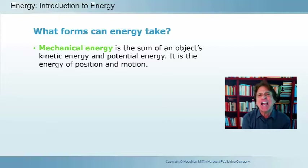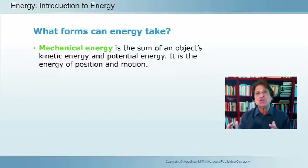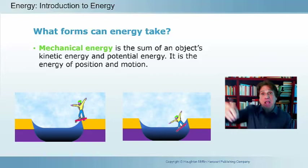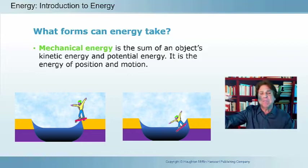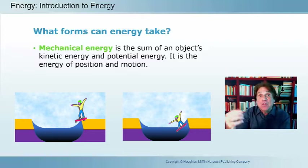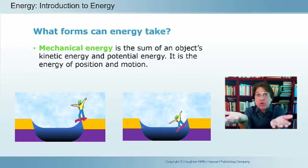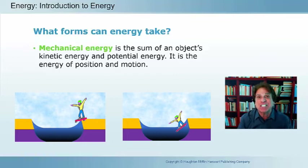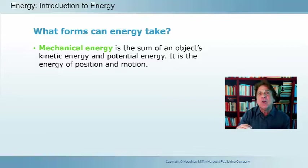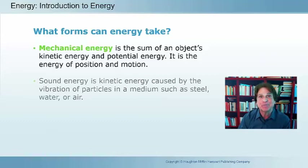Mechanical energy is the sum total of an object's kinetic energy and potential energy — both position and motion. Going back to the skateboarder: at the top of the ramp, high potential energy and zero kinetic energy. Midway down, kinetic energy increases and potential energy decreases. At the bottom of the ramp, relatively zero potential energy but maximum kinetic energy and maximum speed.